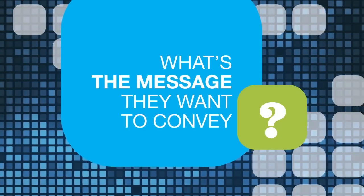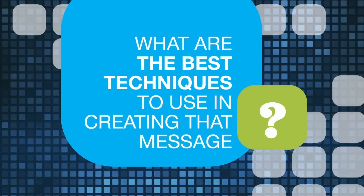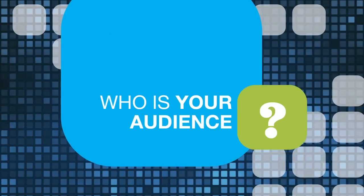One of the ways we can start a conversation about privacy and digital footprints with children is by reminding them that anything they do involves a series of choices: What's the message they want to convey? What's the best tool for doing it? What are the best techniques to use in creating that message? And who's your audience?